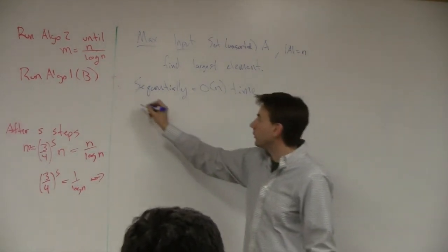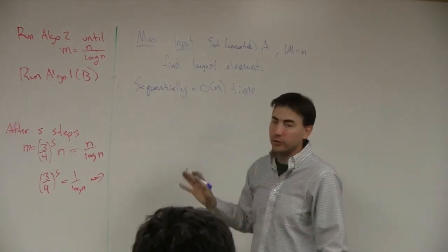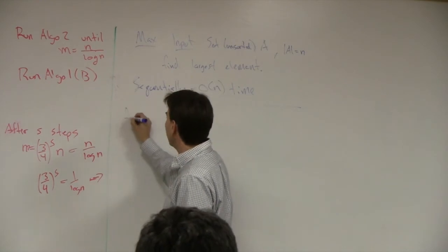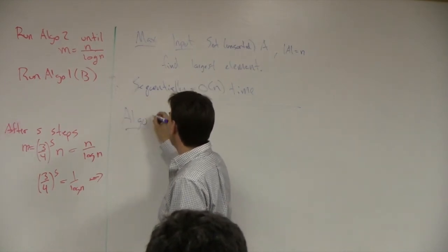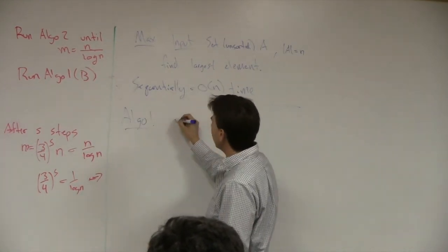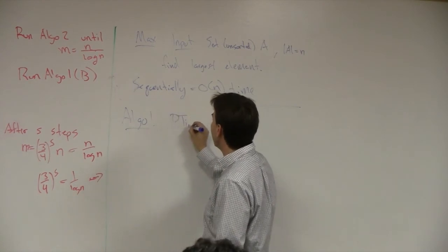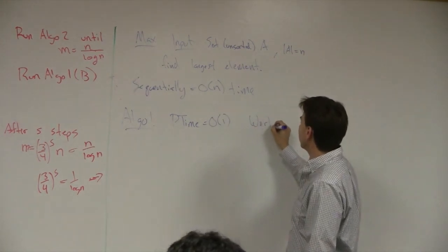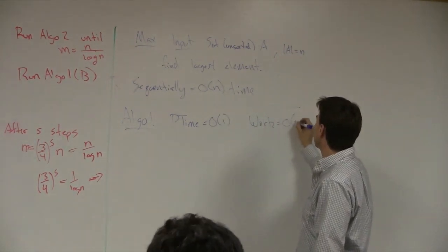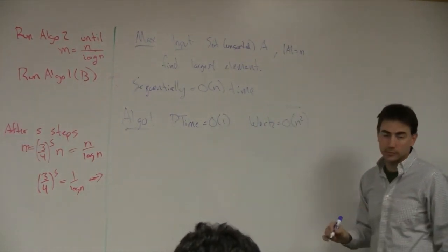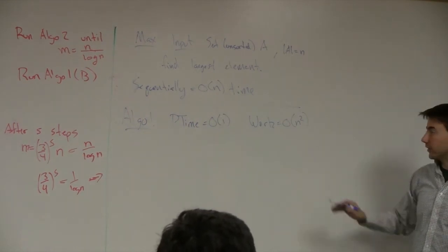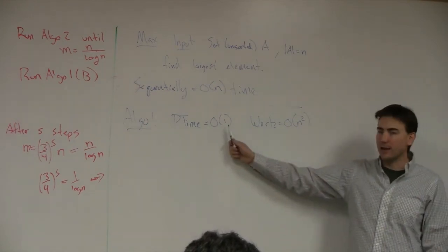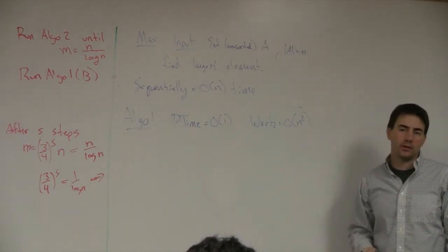Sequentially, this takes O(n) time. We're going to do two different algorithms with different trade-offs, then combine them. Algorithm one is going to take O(1) parallel time but the work is going to be O(n²).